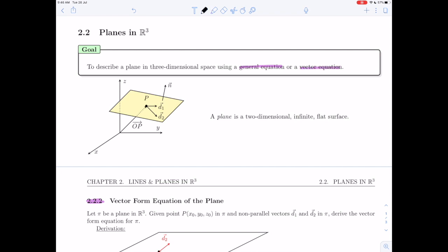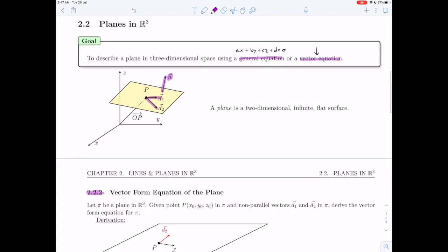The general equation we saw in previous videos was ax plus by plus cz plus d equals 0, and that relied upon the normal vector of the plane. In this video we are going to do the vector equation of the plane, and we are going to be using instead these two vectors d1 and d2 within the plane. So let's go ahead and do that.